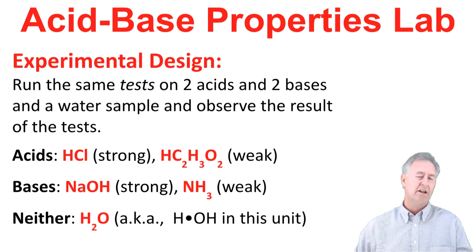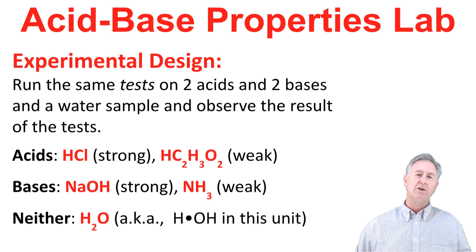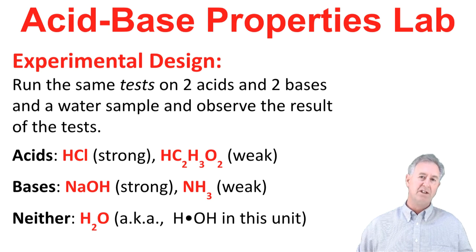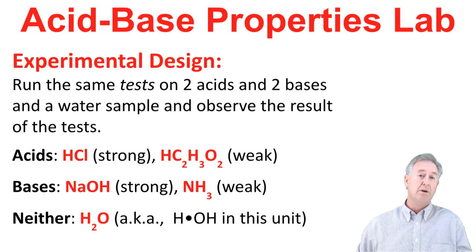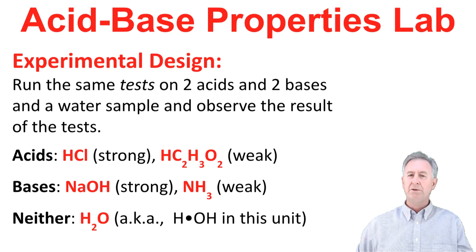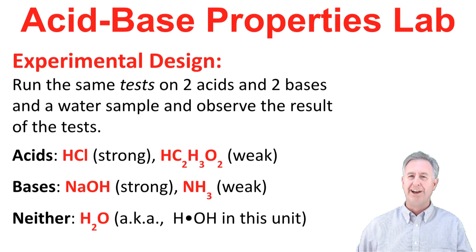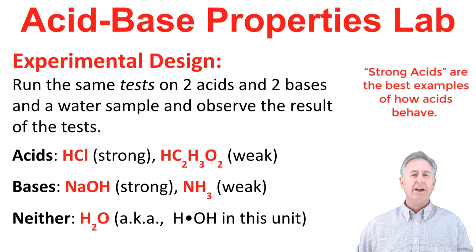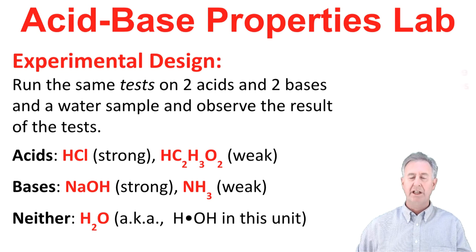The acids we're going to use are hydrochloric acid, HCl, and acetic acid, HC2H3O2. The hydrochloric acid is what we call a strong acid — it's probably the best example of how acids behave. A weak acid like acetic acid is going to behave like an acid, but maybe not quite as obviously.